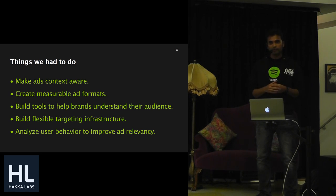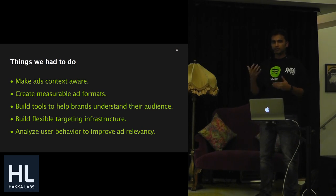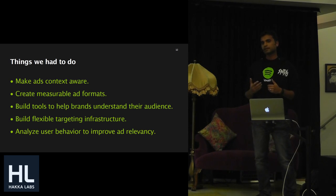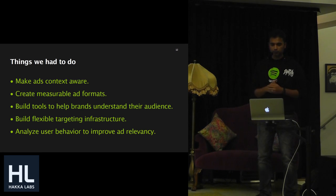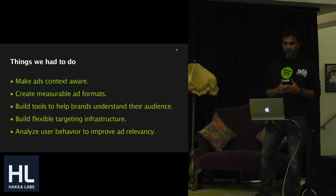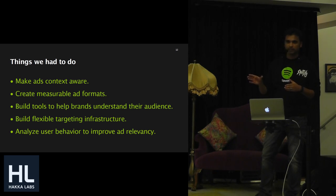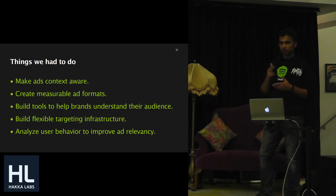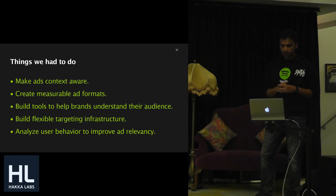We also want to create measurable ad formats. The ad formats shown earlier have a lot of built-in actions we can measure, giving us strong signals about whether users are having a positive response or trying to avoid the ads. Using these measurements, we can optimize the ad experience, understand the relevancy of ads to different users, and figure out what class of ads are more relevant to certain users. We also want to make sure brands understand their audience well — things like demographics, but also for example Red Bull wanting to figure out what genre of music sports lovers stream, and then targeting ads based on that. We also want a very flexible targeting infrastructure because as brands understand their audience better, they want to use more granular targeting to reach them.